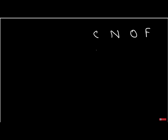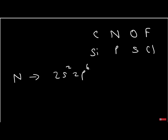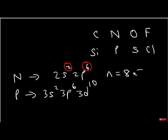Elements below the second row — silicon, phosphorus, sulfur, chlorine — can have what is known as the expanded octet. The reason second-row elements are limited to eight is that their second energy level has only the 2s and 2p sublevels, allowing a maximum of 8 electrons. Phosphorus is in the third row, which also has the 3d sublevel, so the third energy level can hold up to 18 electrons. That is why elements like phosphorus, sulfur, and chlorine can have expanded octets — sometimes 10, sometimes even 12 electrons.